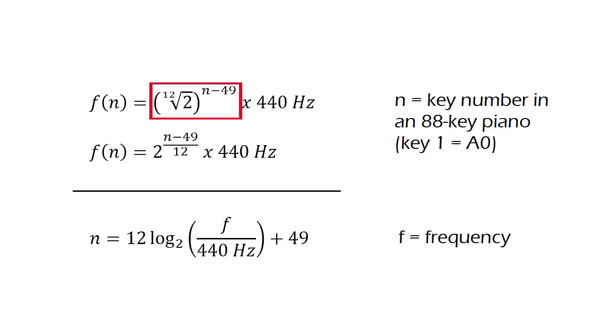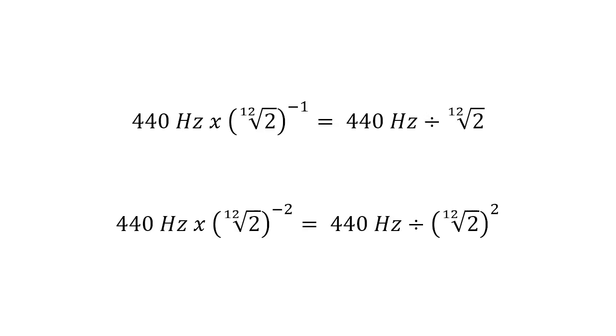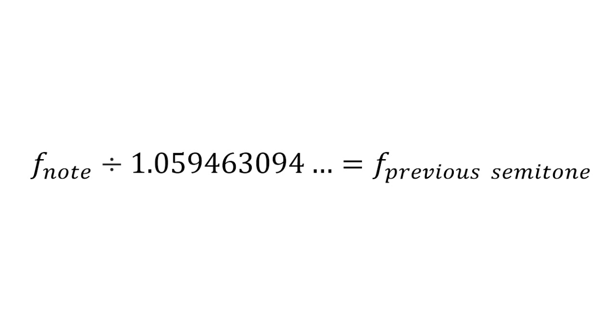We know that the twelfth root of 2 to a certain power represents increases or decreases in semitones. And the power is N minus 49, because we will simply go upwards from A4 or downwards if the power turns out to be negative. This is because a number to a negative exponent is the same as dividing. For example, multiplying by a number to the power of negative 1 is the same as dividing by that number. And multiplying by a number to the power of negative 2 is dividing by that number squared. And we know that dividing by powers of the twelfth root of 2 moves us back toward the lower notes.